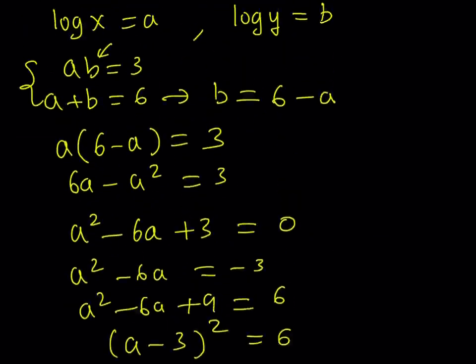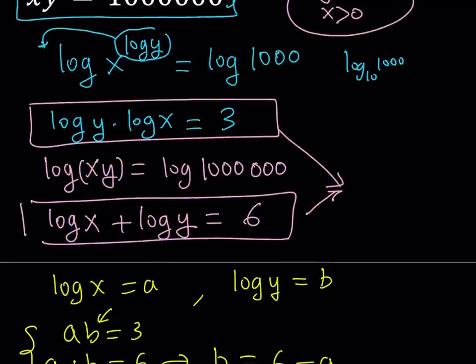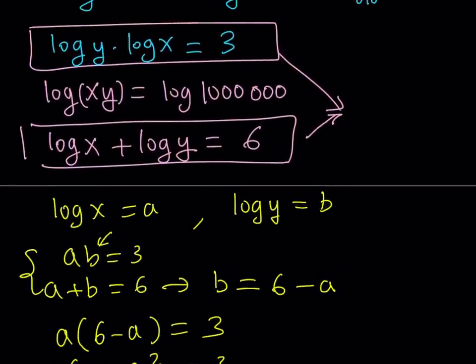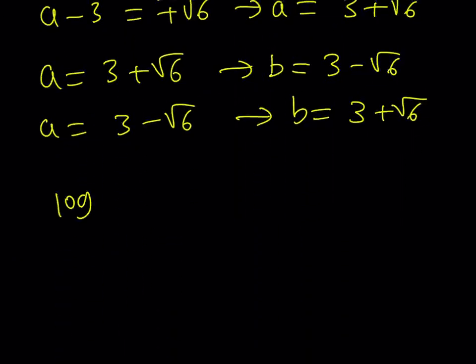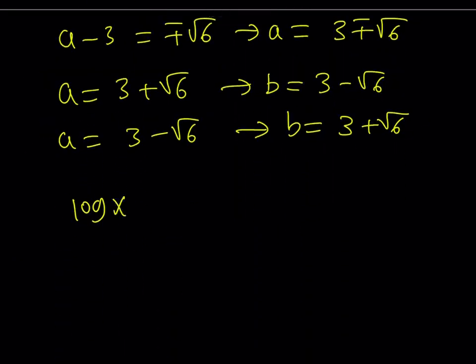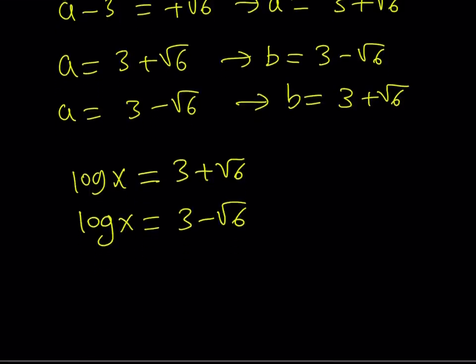But what are the x values? We're looking for x and y, right? Well, we said that log x is a and log y is b. So let's go ahead and get back to it. And log x is a. So since a is 3 plus root 6, for example, from here we can get the first value or log x will be 3 minus root 6.